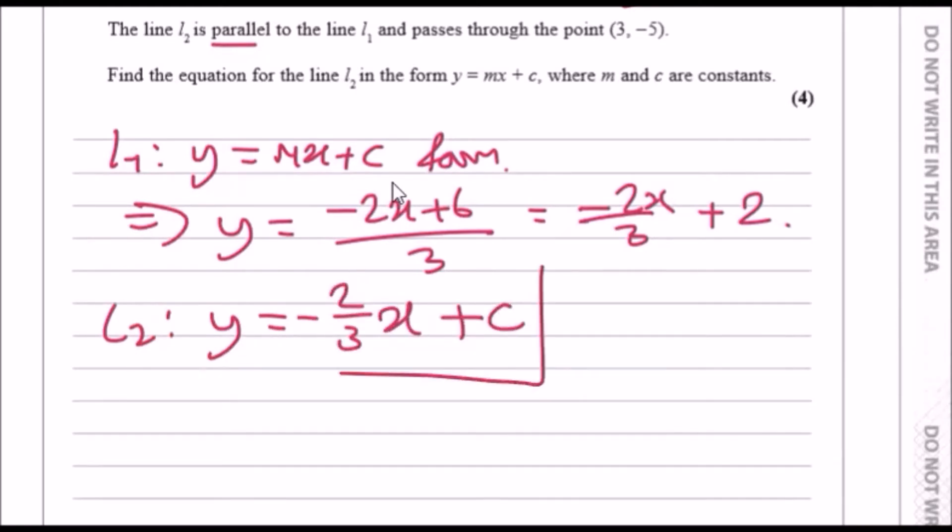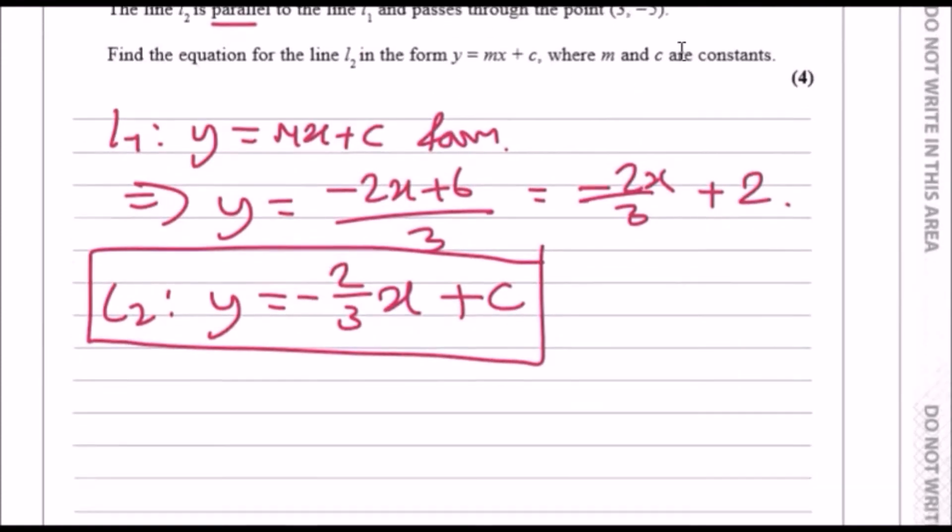Now we simply plug in any coordinates that we know on this line, like 3 minus 5, and find c. At point (3, minus 5)...